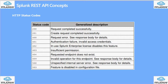404 — request endpoint does not exist or invalid operation for this endpoint; 409 — conflict; 500 — unspecified internal server error; 503 — feature disabled. Responses can include one of these standard HTTP status codes, following the HTTP 1.1 specification with their standard definitions.